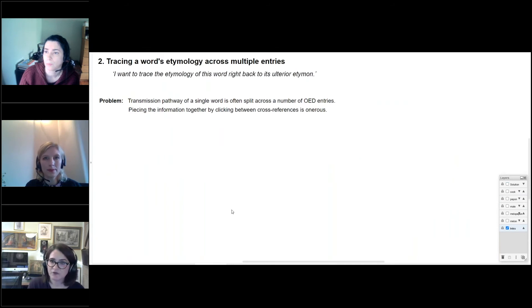So now to our second use case for a future visualization tool. The etymology section of the entry for spirit we've just seen probably contains pretty much all the information that most readers would want to know about the root by which that word came into English. But the same can't be said for every word by any means. Though often the transmission pathway of a word will be split across several OED entries. And in that case, tracing the etymology of a word right back as far as it goes in the OED involves piecing the relevant information together using cross reference links to hop from entry to entry and making notes as you go. This can be quite time consuming and laborious.